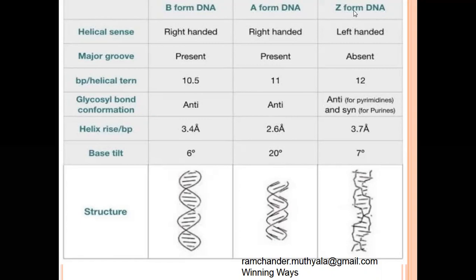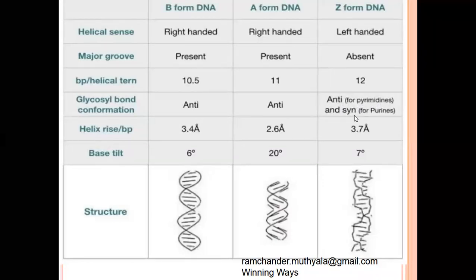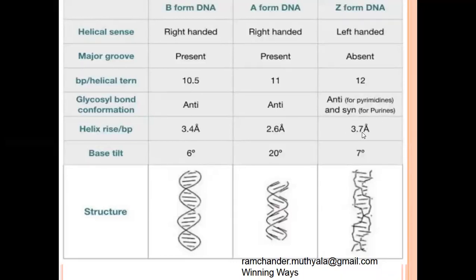The next DNA is Z-form DNA. Z-form DNA has a left-handed helix structure and major grooves are absent. In this DNA, 12 nitrogenous base pairs are present in the helix. The glycosyl bonds are of two types: anti-parallel position for the pyrimidines and syn position for the purines. Between the two nitrogenous base pairs, 3.7 angstroms of distance is present, and the base tilt is 7 degrees.